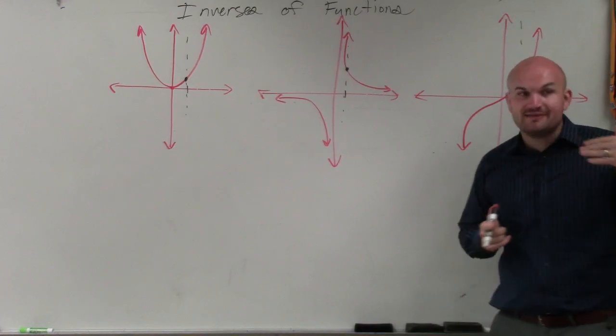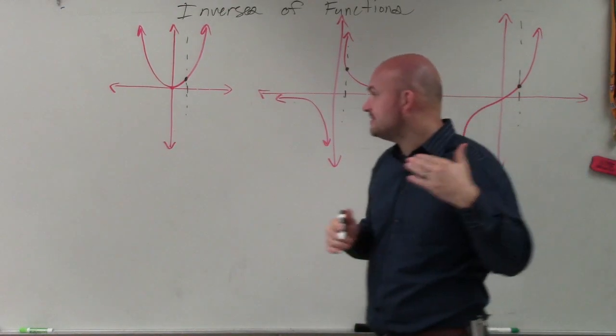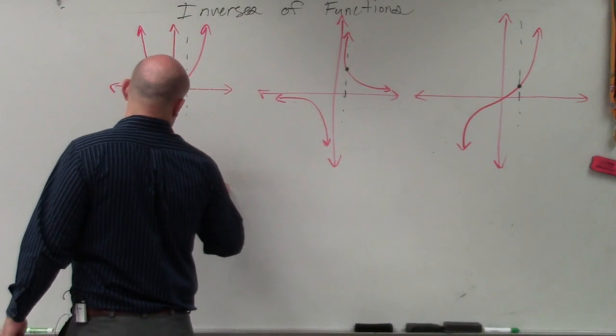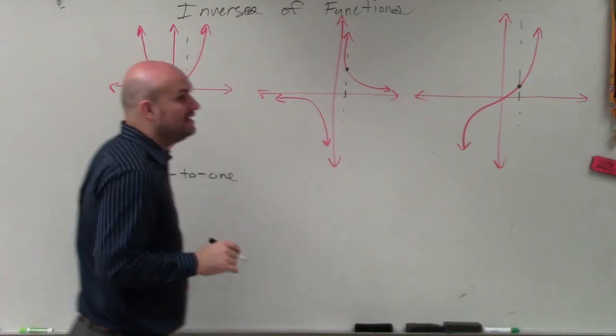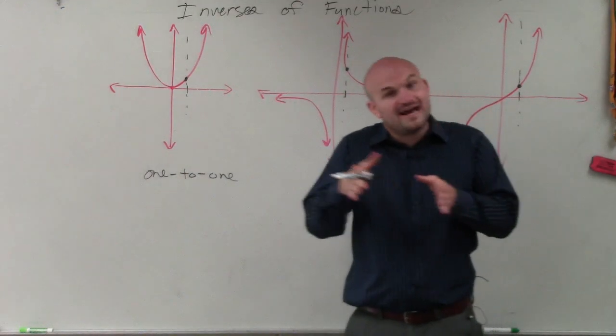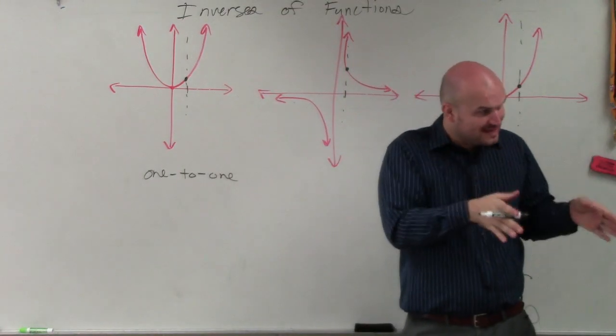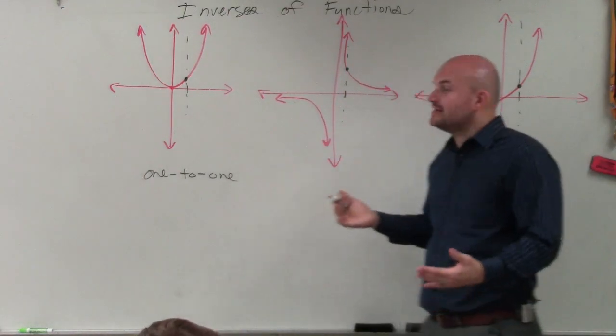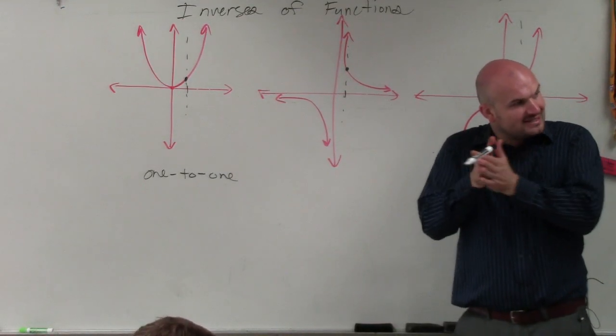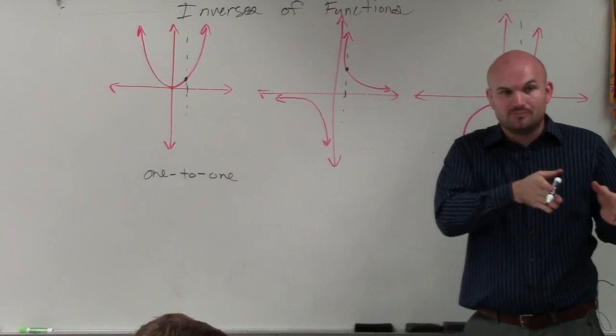However, when we are determining if a function has an inverse, then the graph has to be what we call one-to-one. And what they mean is for a one-to-one, that means for every input we're going to have an output, and for every output we're going to have exactly the same input. So basically, you have every input has exactly an output, and every output has exactly one input.